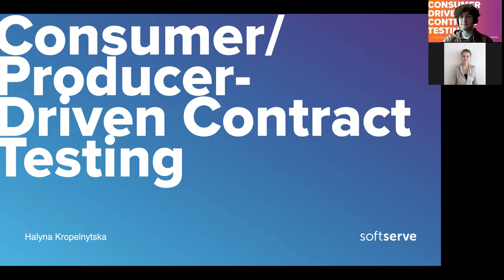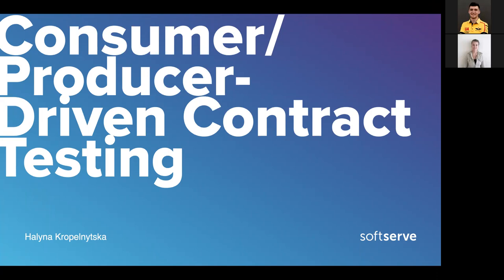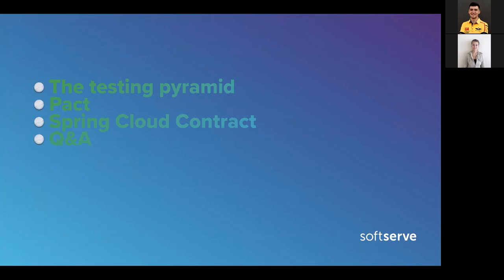Today let's talk about consumer and producer driven contract testing. It will be a short one but interesting if you haven't heard about it. The agenda is: first, the testing pyramid, then some implementation ways for contract testing — that is Pact and Spring Cloud Contract — and then if you have questions, just let me know or interrupt me at any time.